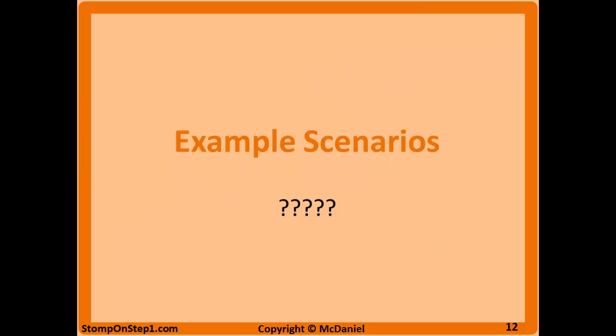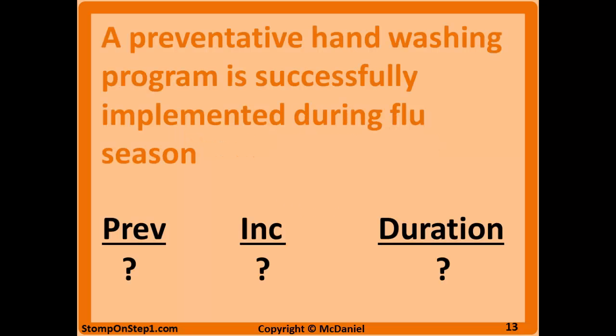Understanding this will be easier with example scenarios, though these are oversimplified. First: a county successfully implements a hand washing campaign, lowering the number of new flu cases. Incidence goes down — that's the main effect. Prevalence also goes down as a result, because fewer new cases means fewer total cases, while duration remains the same. Next: a new viral strain of the flu is more infectious and spreads faster, so more new cases occur. Incidence goes up, and since duration is unchanged, prevalence goes up as well.